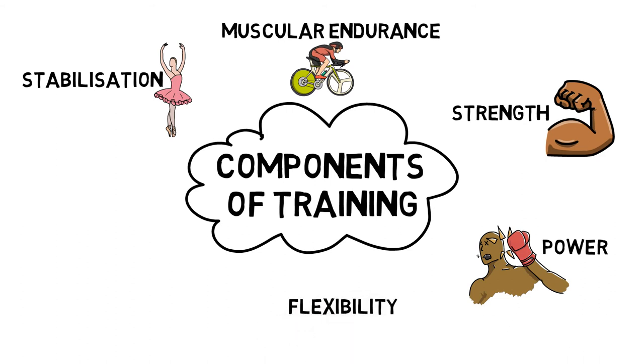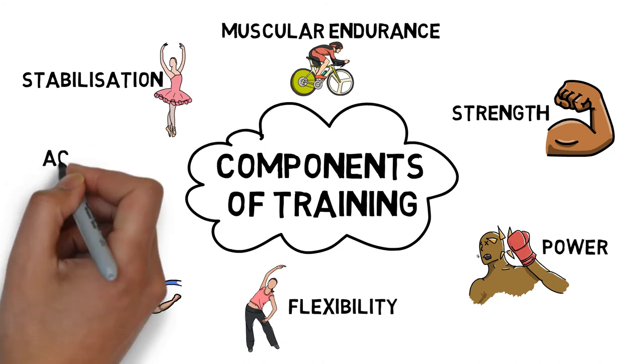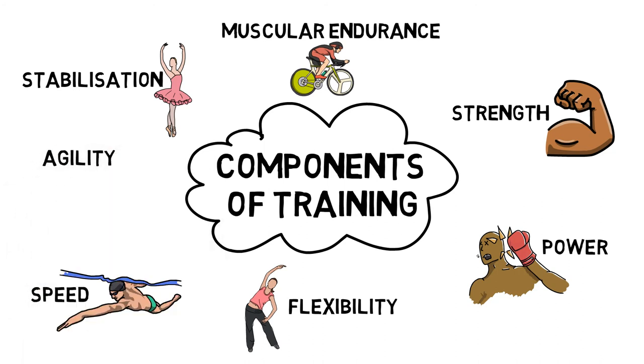Flexibility, which is the normal extensibility of all soft tissues that allow for full range of motion of a joint. Speed, which is the ability to move the body in one intended direction as fast as possible. And agility, which is the ability to accelerate, decelerate, stabilize and change direction quickly whilst maintaining correct posture.